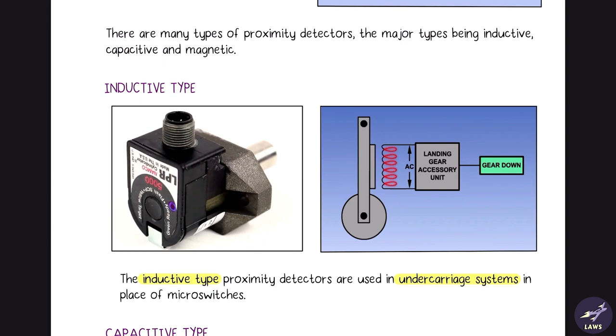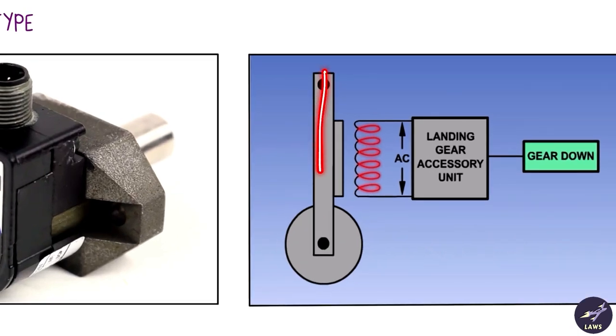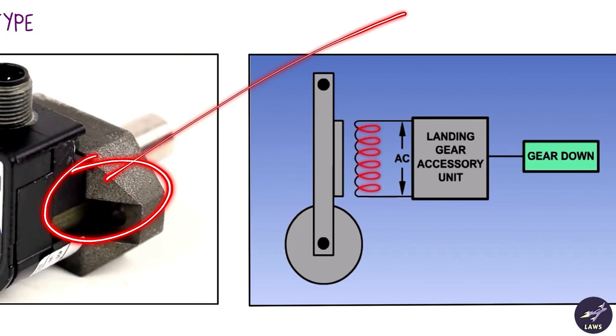Inductive type are used in undercarriage system - important for exam - and basically detect the position of the landing gear. If it is like this it will detect that the gear is close by and give a gear down indication. If the gear is up it will give a gear up indication.